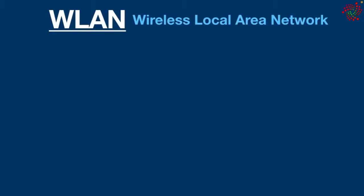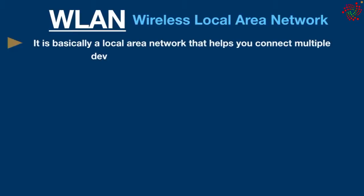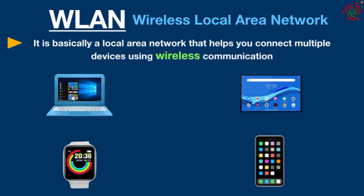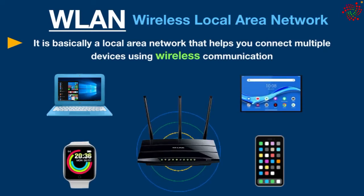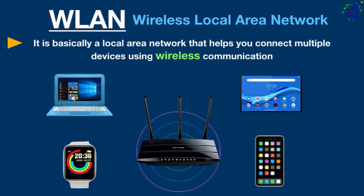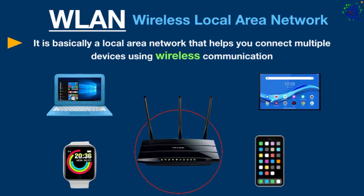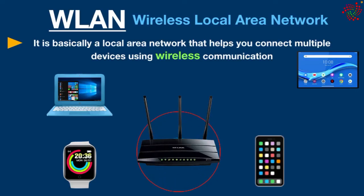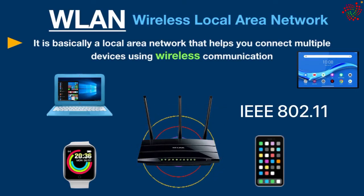A Wireless Local Area Network (WLAN) is basically a local area network that helps you connect multiple devices using wireless communication such as a Wi-Fi router or wireless access point, instead of wired communication, within a limited area like a home, school, or office. Wireless LAN gives you the ability to move around within a local coverage area while staying connected to the network. Today, most modern WLAN systems are based on IEEE 802.11 standards.